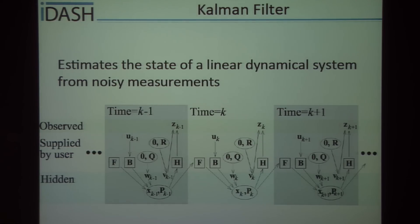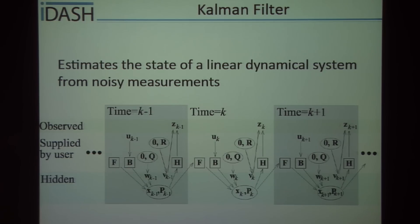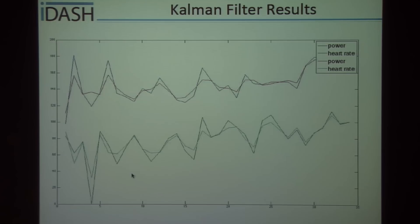With the Kalman filter, you estimate what your state is using the F and B matrices, then compare it to what you actually observe. You get an estimate of the mean — X of K — and your variance — P of K — and you go over the data filtering it at each point in time. We applied this to power and heart rate data taken from a patient riding on a bicycle.